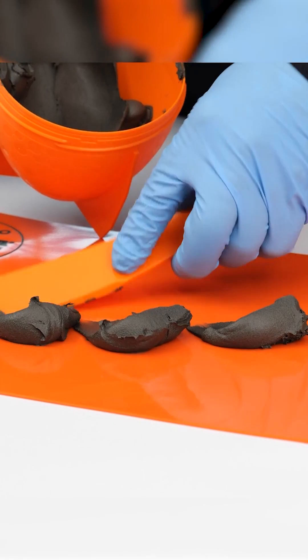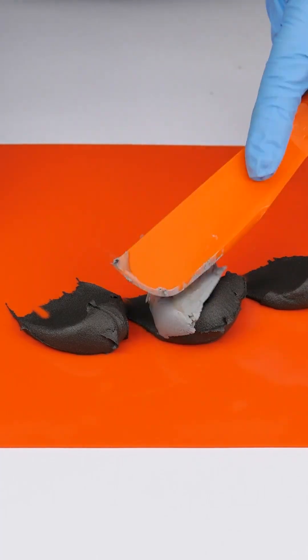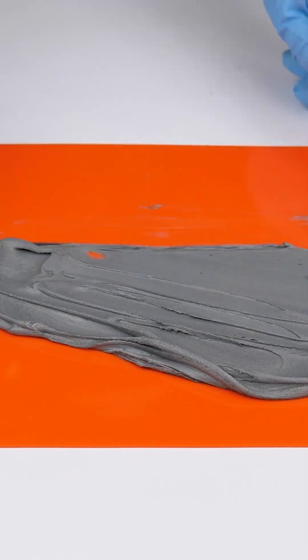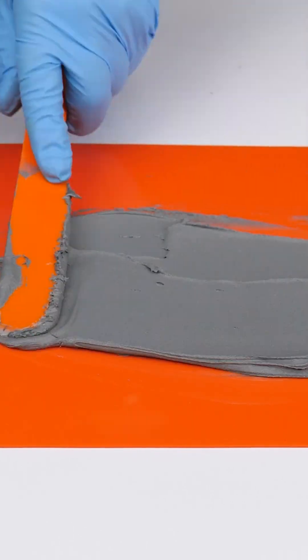Mix Belzona 1111 at a volumetric ratio of three parts base to one part solidifier. Thoroughly mix until a uniform color and consistency are achieved.